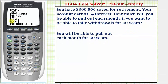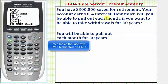Payments per year will be 12 since you're taking monthly payments, so we enter 12 and press enter. This automatically changes the number of compounds per year to 12, which again we're assuming is correct.